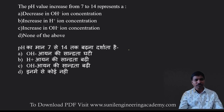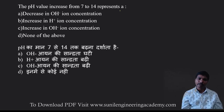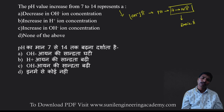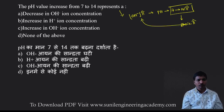As pH value increases from 7 to 14, it becomes more basic. That means as OH⁻ ion concentration increases, pH goes from 7 to 14 — both are directly proportional. Increasing OH⁻ ion concentration means increasing basic nature.